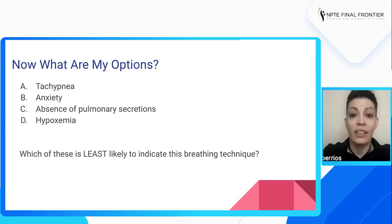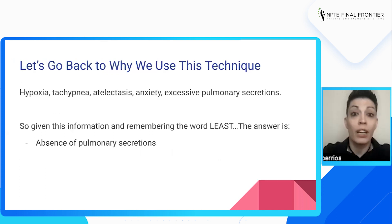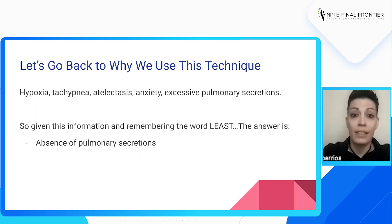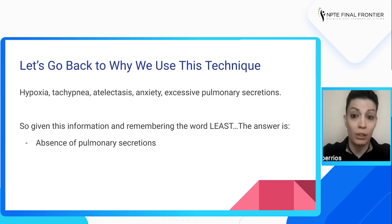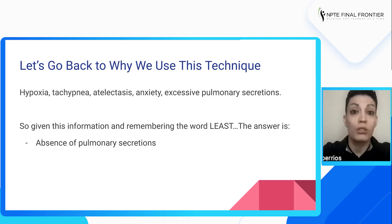So which of these is least likely to indicate this breathing technique? Going back to why we use this technique: it's used for low oxygen in the blood, increased respiratory rate, atelectasis, anxiety, and excessive pulmonary secretions. Given all of this information, and remembering the key word 'least' — don't forget key words like least, most, and except, because after all this thinking it's easy to overlook them and get the question wrong — the answer is absence of pulmonary secretions, option C. We use this technique to help people with excessive pulmonary secretions, not in the absence of them.